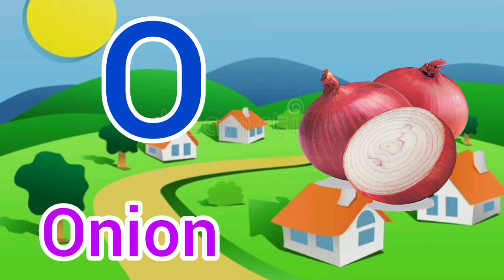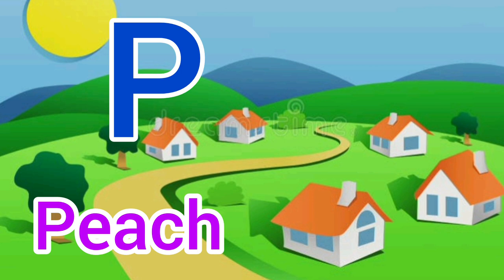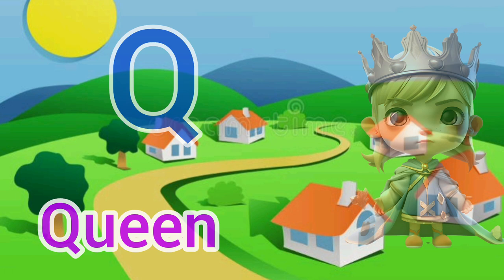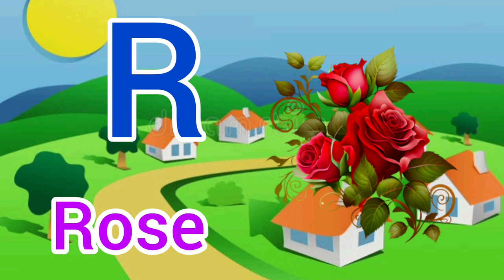P for peach. Peach means adu. Q for queen. Queen means rani. R for rose. Rose means gulab.